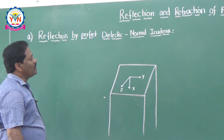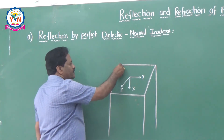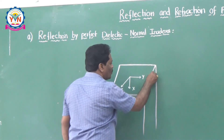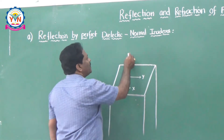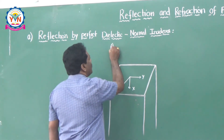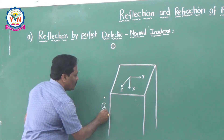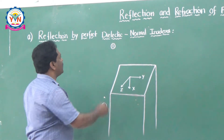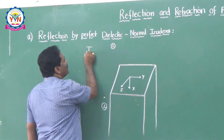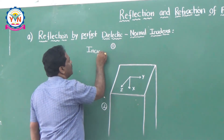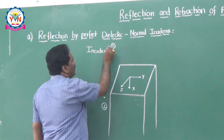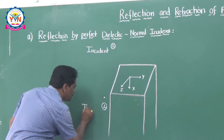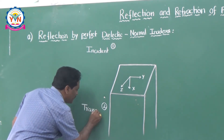Here we have a boundary separating two media. This is medium one and this is medium two. Instead of calling them medium one and medium two, we can call them the incident medium and the transmitted medium.